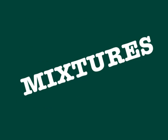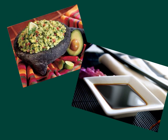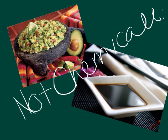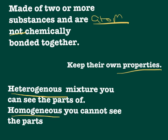Finally, we're going to talk about mixtures. Mixtures are different compared to the other two because they're not chemically bonded. Mixtures are made up of two or more substances and atoms that are not chemically combined or bonded together. These atoms keep their own properties. There are two types of mixtures: heterogeneous mixtures, where you can see the parts, and homogeneous mixtures, where you cannot see the parts.